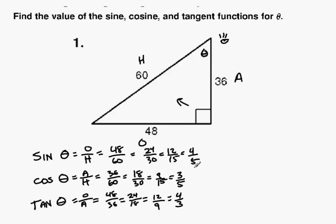So these are your sine, cosine, and tangent of theta. Always try to reduce your fractions. Reduce your fractions or ratios.